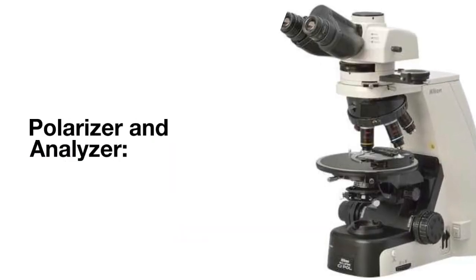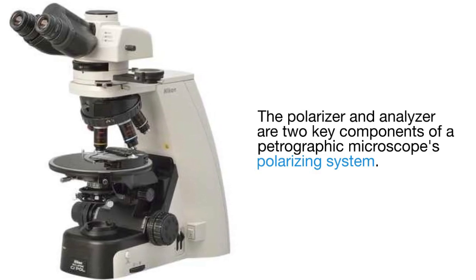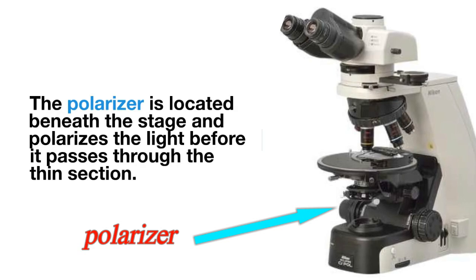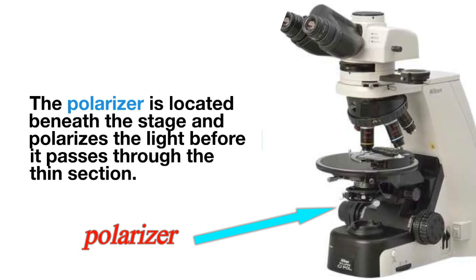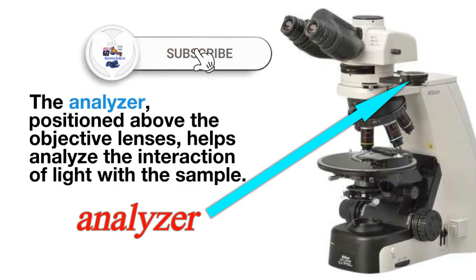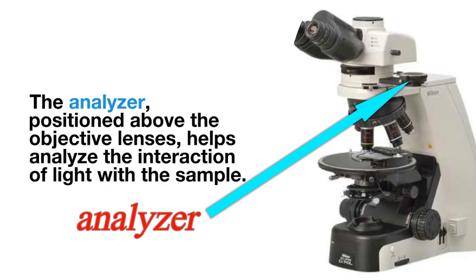Polarizer and analyzer. The polarizer and analyzer are two key components of a petrographic microscope's polarizing system. The polarizer is located beneath the stage and polarizes the light before it passes through the thin section. The analyzer, positioned above the objective lenses, helps analyze the interaction of light with the sample.